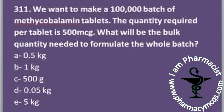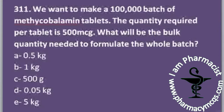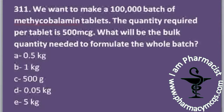We want to make a batch of one hundred thousand methylcobalamin tablets. The quantity required per tablet is 500 micrograms. We have to calculate the bulk quantity needed to formulate the whole batch. This is an industrial tablet formulation calculation question. The active ingredient methylcobalamin, which is Vitamin B12, is used at 500 micrograms per tablet.